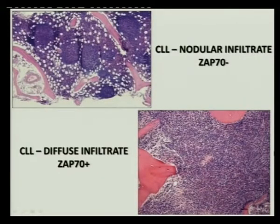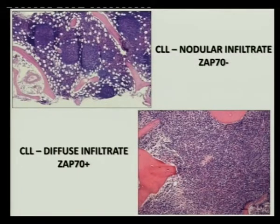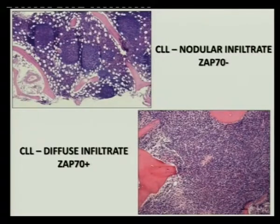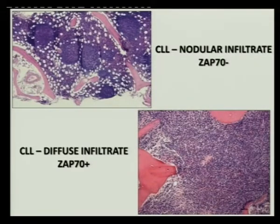A lot of questions arise about whether we really need bone marrow to diagnose CLL. Actually no — it's diagnosed by peripheral blood count and immunophenotype. The bone marrow does have prognostic value, though, including for progression to high-grade lymphomas or transformation. The pattern of bone marrow infiltration has been studied: nodular infiltrate correlates with good prognosis and ZAP-70 negativity, while diffuse infiltrate correlates with ZAP-70 positivity and a poorer outcome — so it's more prognostic than diagnostic.